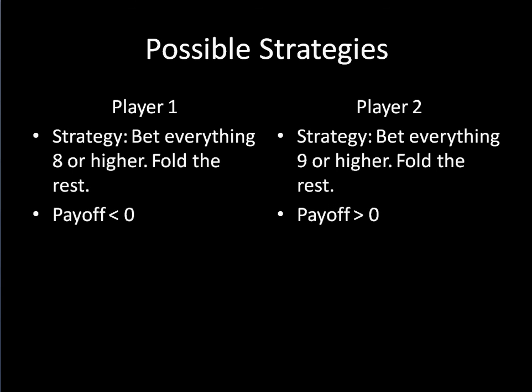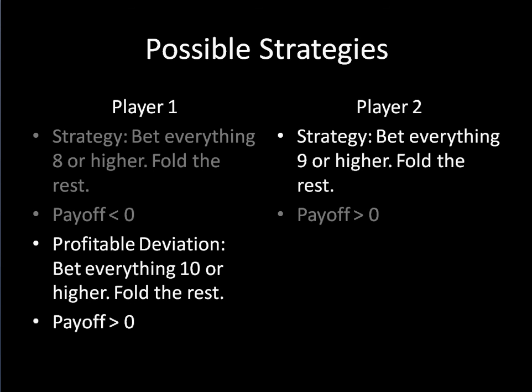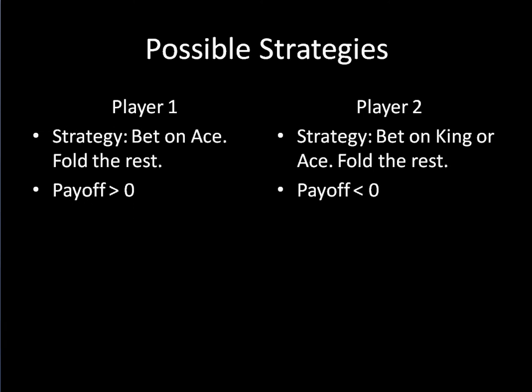Now we go back to looking at whether player one might want to switch strategy. And sure enough, switching to betting everything ten or higher works better. After making this change, player one earns a positive payoff while player two is back in the negative. We can actually use this logic all the way up until we get to a king and an ace. If player one bets on ace and player two bets on king or ace, player one draws when player two has an ace and wins when she has a king. Thus his payoff is going to be positive and her payoff is going to be negative.